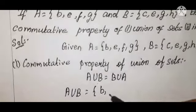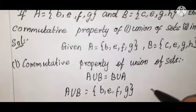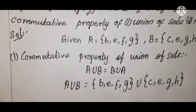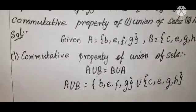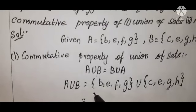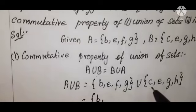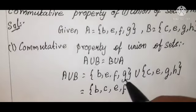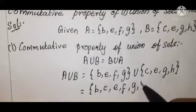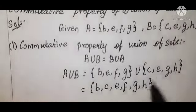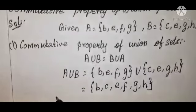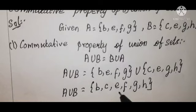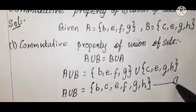A union B: write set A as {B, E, F, G} union {C, E, G, H}. Taking the union of both sets, A union B equals {B, C, E, F, G, H}. This is equation number one.